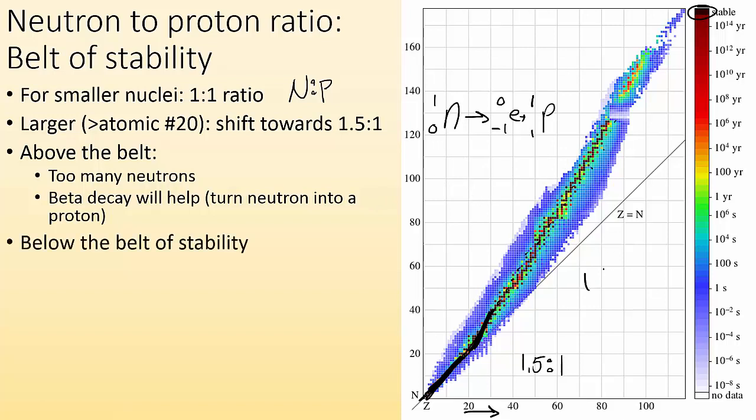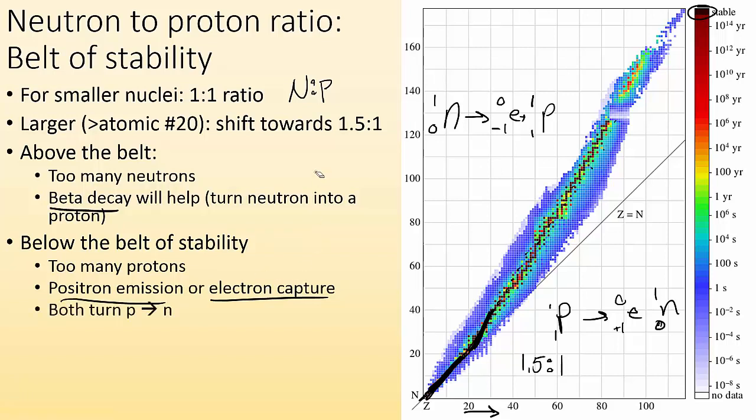What about if you're below the belt in this area, over here? In that instance, you have too many protons. So do we know of any decays that will convert a proton into a neutron? We sure do, positron emission. So if we had a proton and we gave off a positron, that is going to give us a neutron. Or if we did electron capture, where an electron falls in and essentially converts a proton into a neutron. Both of those, the positron emission and electron capture, will convert a proton into a neutron.